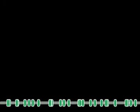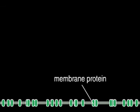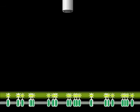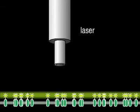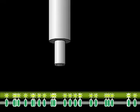The lateral mobility of membrane proteins can be measured in living cells by FRAP, which stands for fluorescence recovery after photobleaching. For this purpose, membrane proteins are often expressed as fusion proteins with the green fluorescent protein GFP and observed with a fluorescence microscope. A selected area of the cell is then bleached with a strong computer-controlled beam of laser light.